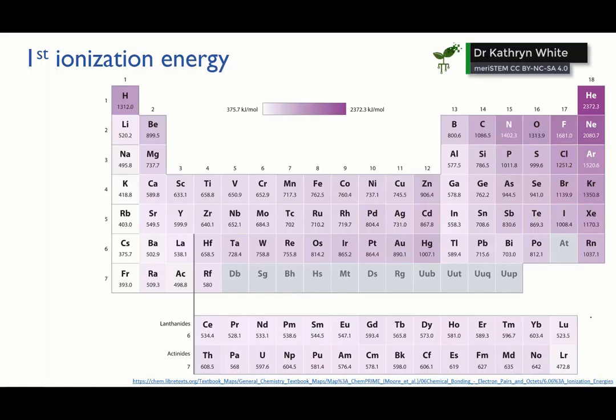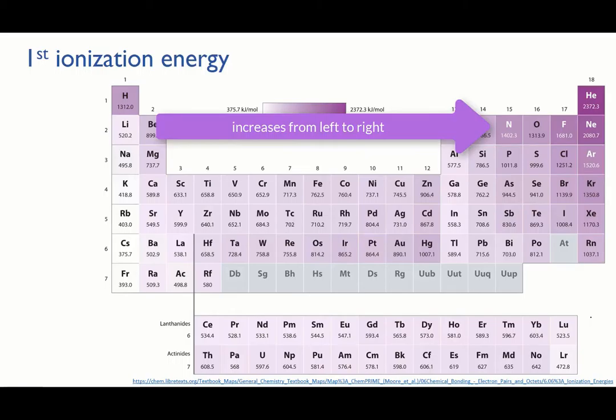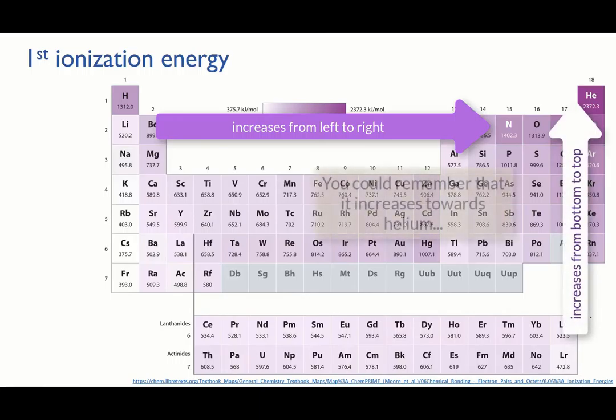So let's look at the trends in the first ionization energy of the elements and then we'll talk about the factors that influence those values. Broadly the trend is that the ionization energy increases as you move from left to right across a period and from bottom to top up a group.